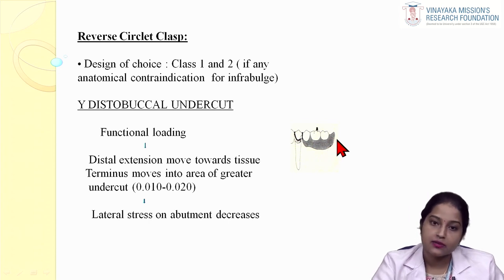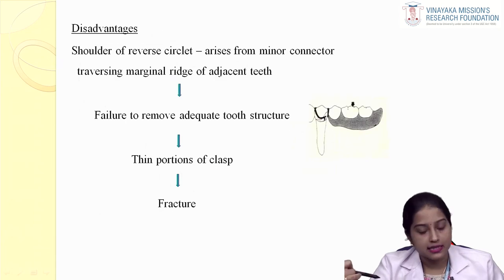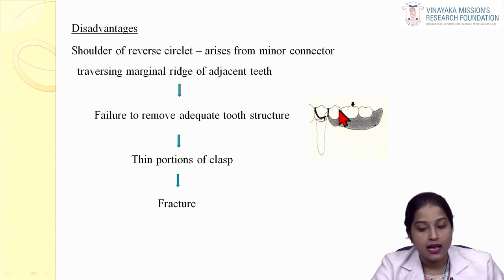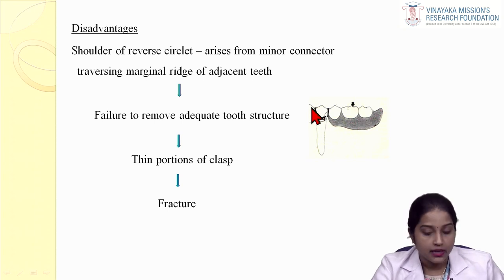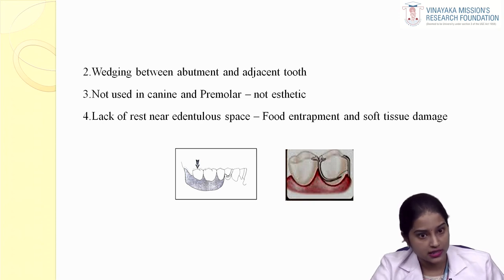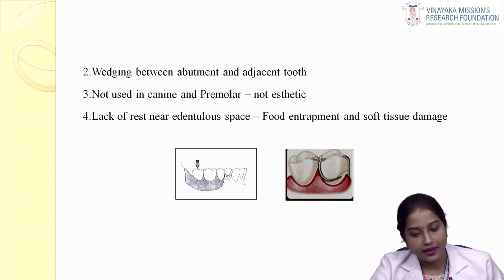This is why a reverse circulate clasp — the reverse of the simple circulate clasp — is used in distal extension cases. Its disadvantages include: a minor connector runs between the abutment tooth and its adjacent tooth, and if this portion is not prepared properly, there are chances of fracture; a wedging action can occur between the abutment and adjacent teeth; it cannot be used in canine and premolar for aesthetic reasons; and there is lack of rest near the edentulous space, which can cause food entrapment or soft tissue damage.